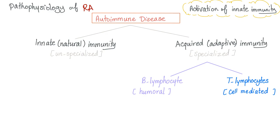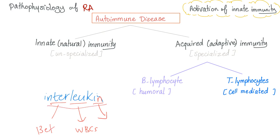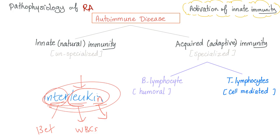This produces something called interleukins. 'Inter' means between, 'leuk' means leukocytes — so interleukin is literally the internet of the leukocytes. These interleukins stimulate inflammation. The problem in rheumatoid arthritis, however, is that there's no bacteria to attack — the body is literally attacking itself, which is why it's a disease.